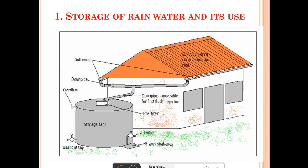The collection area in most cases is the roof or terrace of the building. The effective roof area and material of the roof or terrace influence the efficiency of collection. A conveyance system usually consists of gutters and pipes. We use CI or PVC pipe, AC pipe or GI pipes to convey water through the mechanical filter to the storage tank. For storage, tanks made of RCC, bricks, or ferrocement are used.